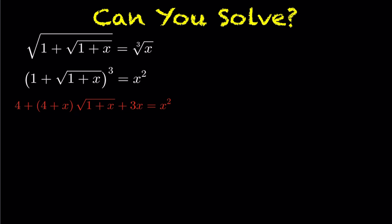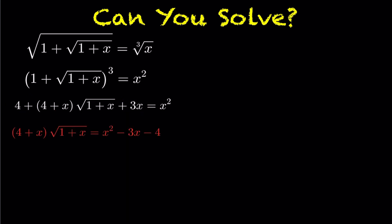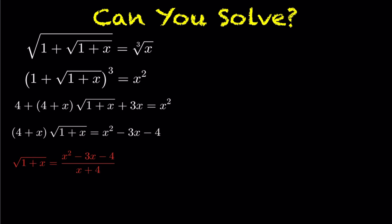What we're going to do here is isolate the root of (1+x). First we bring over the four and the three x, giving us: four plus x times the root of (1+x) on the left. On the right hand side we have a quadratic that factors nicely, and we're looking to solve for the root of (1+x).